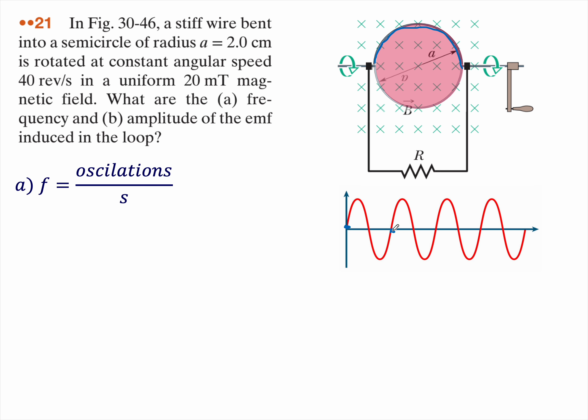Each revolution is going to produce one complete cycle. We're told that it's doing 40 revolutions per second. Frequency is defined as the number of oscillations per second. In this case, it's going to do 40 complete revolutions every one second, and that's going to produce one oscillation in the EMF curve.